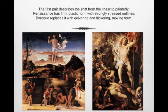The first pair describes the shift from the Linear to the Painterly. Renaissance has firm, plastic form with strongly stressed outlines. Baroque replaces it with quivering and flickering, moving form. Elements in the linear canvas are primarily described by line — figures are distinct from one another, and the painting is basically a colored drawing. The painterly painting relies on color to express form; paint is loosely handled, and form is not defined with discrete lines, but the edges of the forms are not readily apparent — they are implied or expressed.